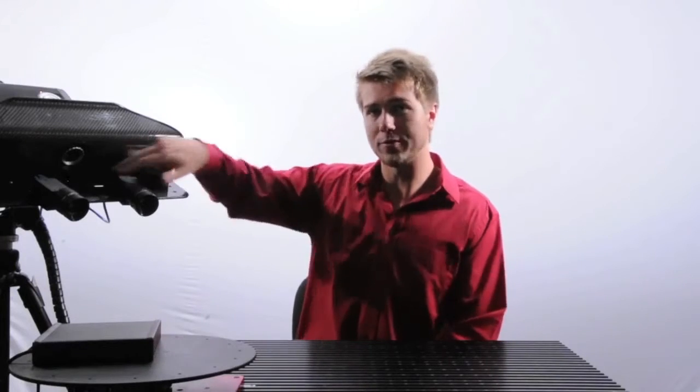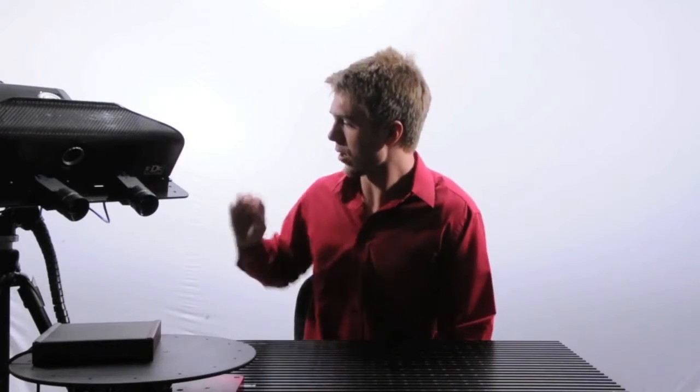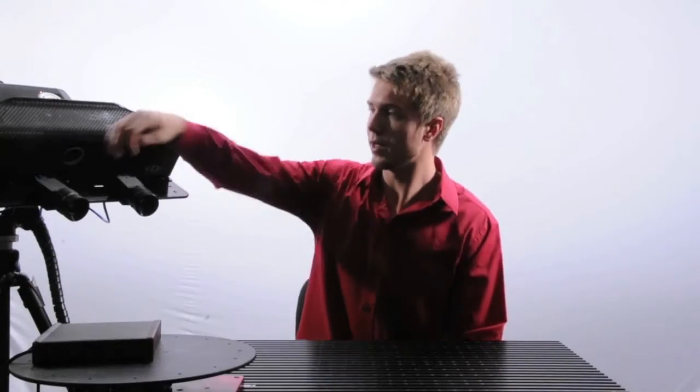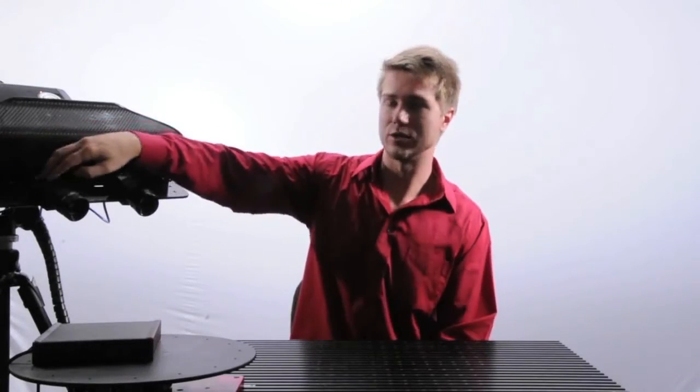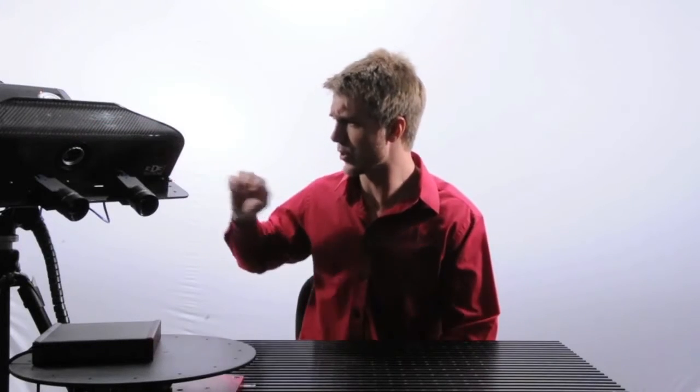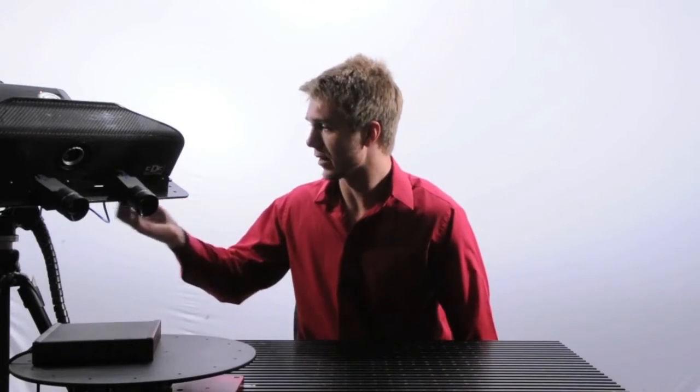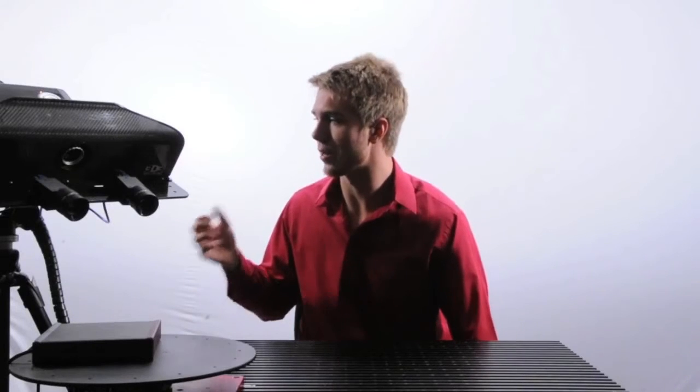On the scanner, you can see we have a carbon fiber bridge. On either side of this bridge, we have three screw set locations, each with two screw holes. These are designed for you to easily place your lenses in these mounting locations and begin scanning very quickly.